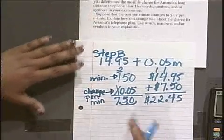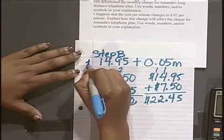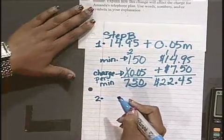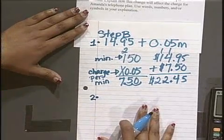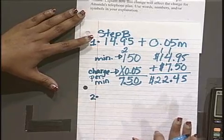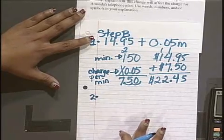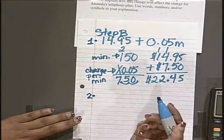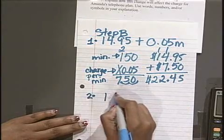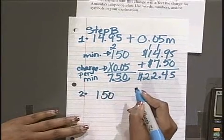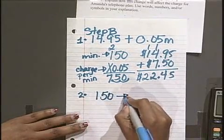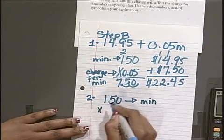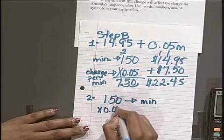So now I'm going to move to my second bullet. This is bullet 1. So I'm now going to move to my second bullet. Suppose that the cost per minute changes to $0.07 per minute. Explain how this change will affect the charge for Amanda's telephone plan. So I'm going to use 150 minutes again. They did not change that in the ECR. So those are my minutes.